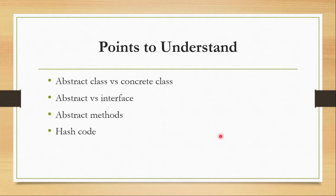Points to understand: abstract class versus concrete class. A concrete class is a normal class. An abstract class is a class where we can't create an object directly — we need to inherit it into a class first. The abstract class should be declared abstract, and whatever methods are in the abstract class must be overridden in the subclass.